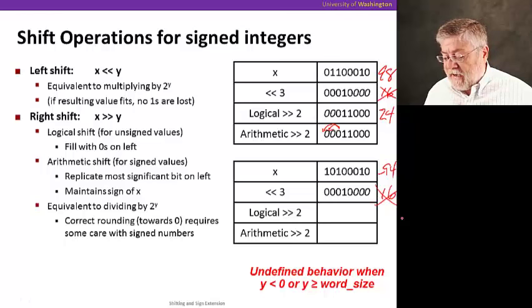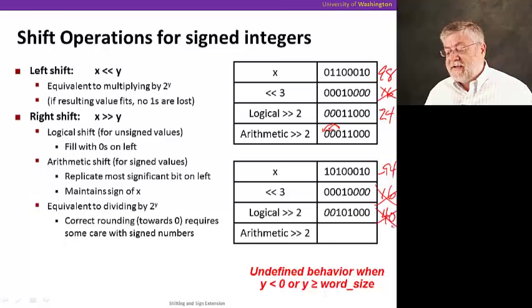When we divide by four, by shifting to the right by two, we would want the result to be minus 23.5. But if we just fill in with zeros, as we do for our logical shift, then we're going to get a result of 40, which is also clearly wrong. It's not even negative. We've totally lost that signed bit.